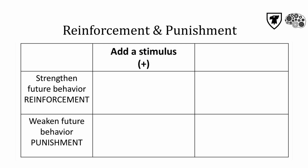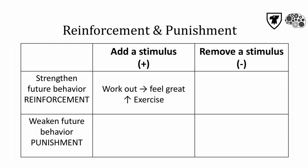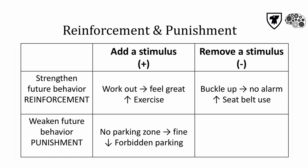Positive reinforcement is when the behavior results in the addition of a desirable outcome, such as feeling great after exercise. People who feel good after exercising will likely repeat that behavior in the future. Negative reinforcement occurs when we respond to get rid of something undesirable, such as buckling a seat belt to get rid of the annoying buzzing alarm. Positive punishment is when a behavior results in the addition of something undesirable — an example is parking in a no-parking zone and getting a ticket. Negative punishment is when a behavior results in the loss of something desirable, such as when a kid uses bad language and loses all screen time for the day.